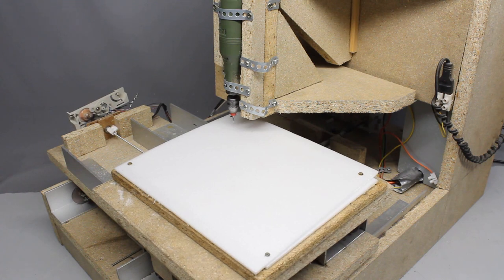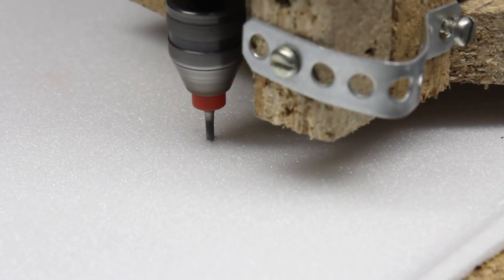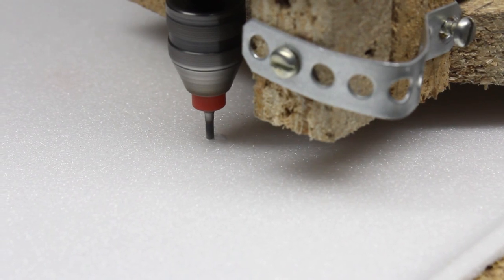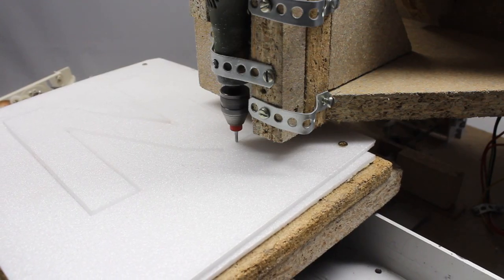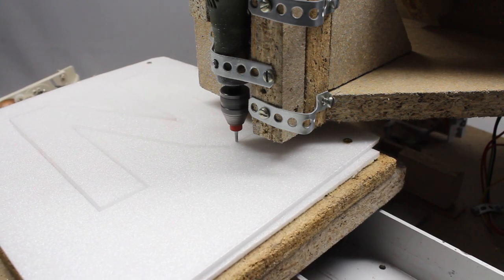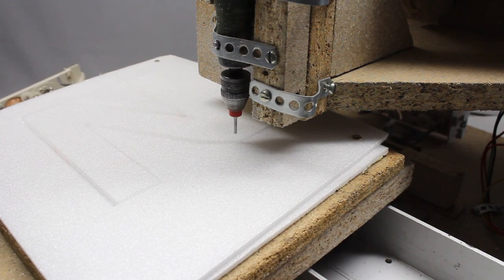3mm depron is more easy to process. The machine can cut the material with maximum speed. There is a second layer of waste depron underneath the material to be processed to avoid the router bit from diving into the wood.